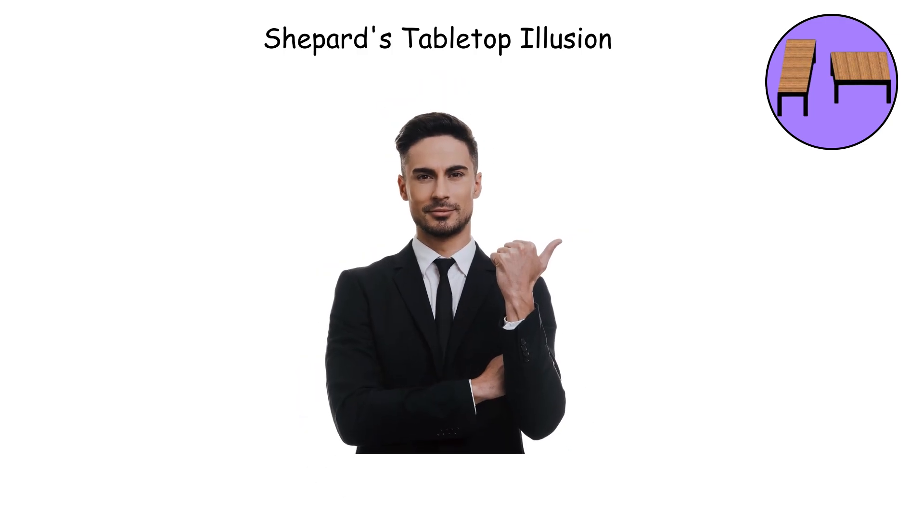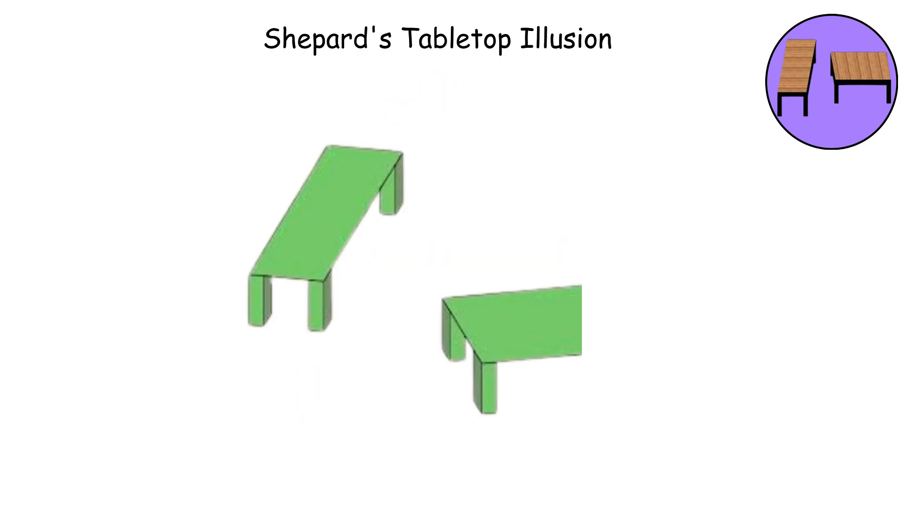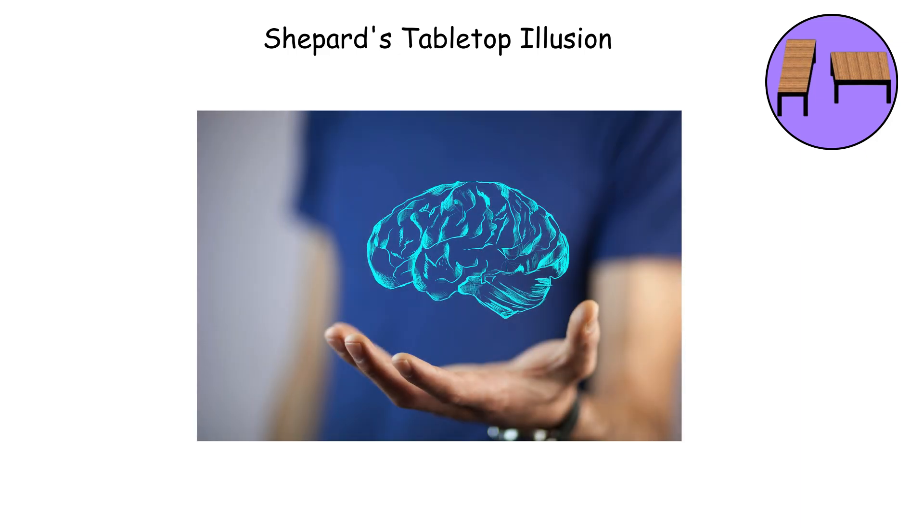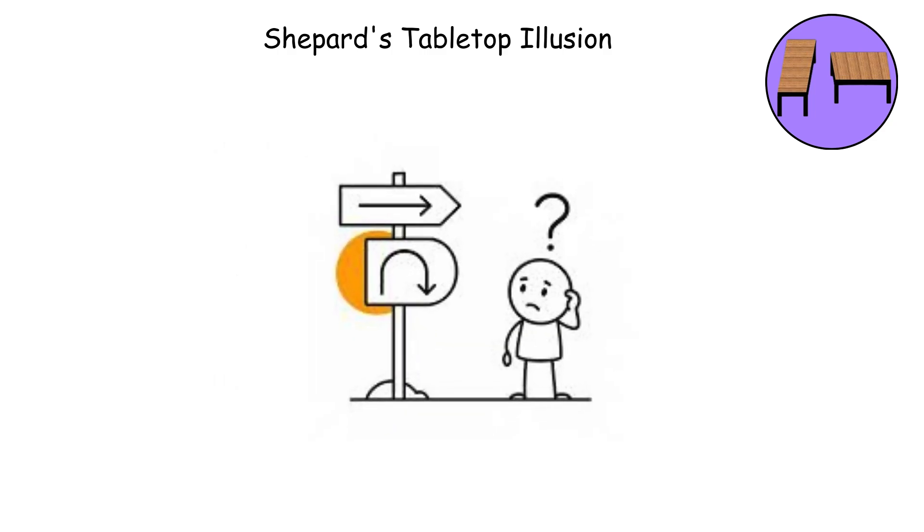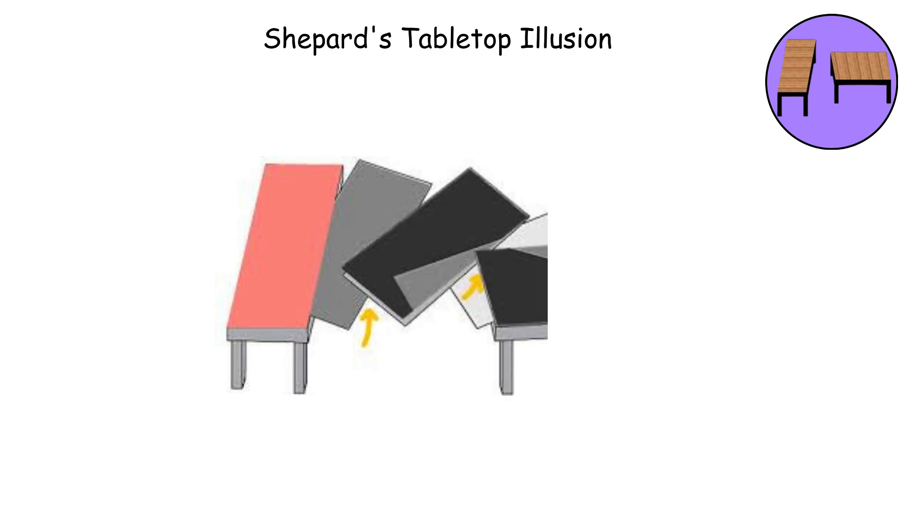In this illusion, you've got two parallelogram tabletops drawn in perspective. One appears to be oriented lengthwise, and the other appears to be oriented widthwise. Your brain is absolutely convinced that one table is longer and narrower, while the other is shorter and wider. But here's the plot twist. If you trace both tabletops and lay them on top of each other, they're identical in every dimension.